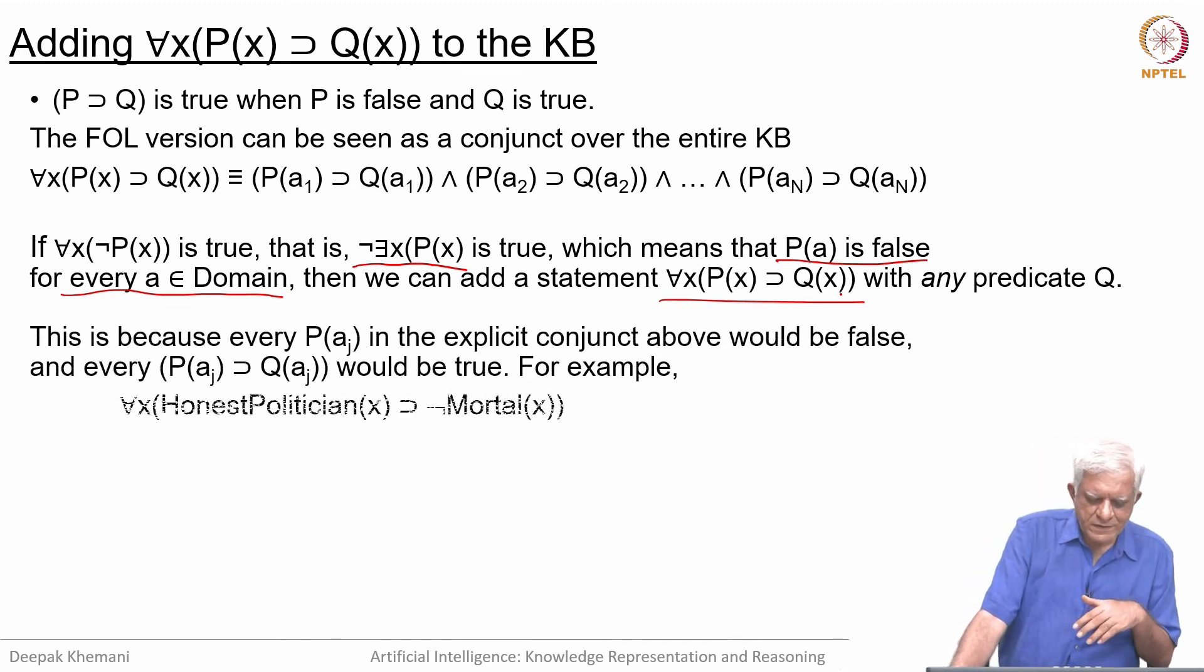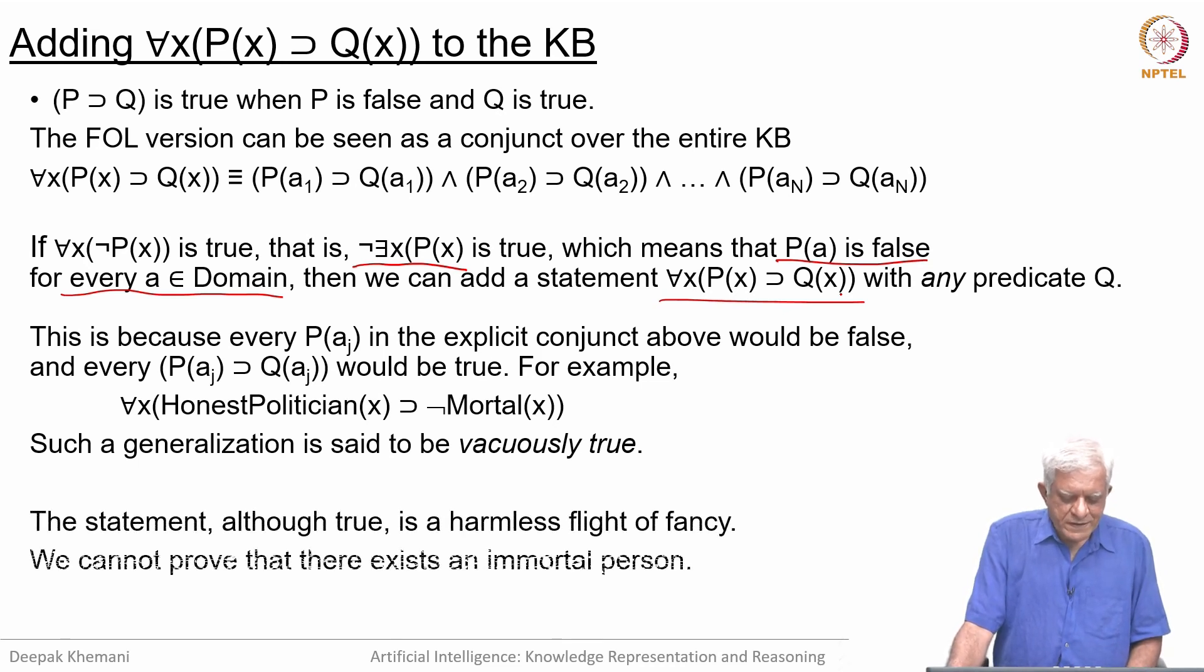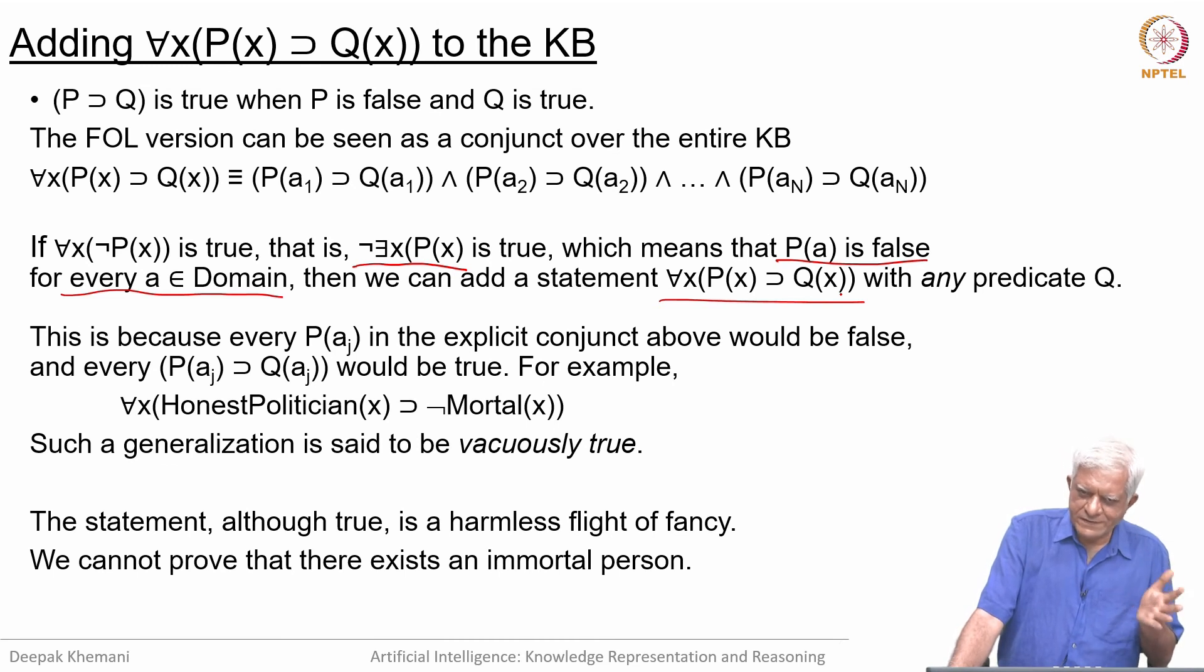For example, we could write that all honest politicians are immortal. If there are no honest politicians, which is what this example is saying, then this universal statement is vacuously true. It may be true but it is a harmless flight of fancy because we cannot prove that there is some immortal person there. If somebody says is there an immortal person, then one would say you show me an honest politician and I will show you an immortal person, but if there is no honest politician then that is all. That is another case of this thing.